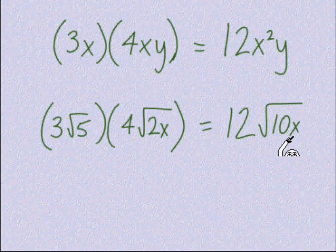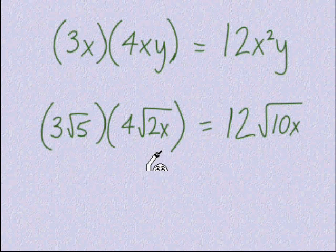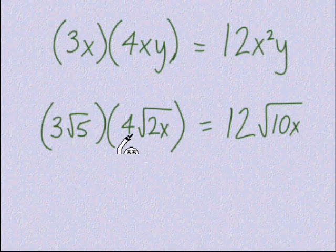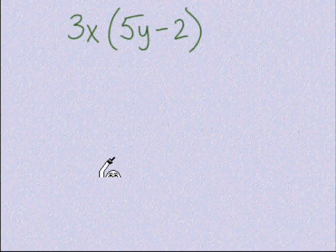An informal phrase I use is: outsiders go with outsiders, insiders go with the insiders. That helps me remember that when it comes to multiplication, we can definitely multiply radicals together — they do not need to be like radicals or like terms. Just remember: outsiders multiplied together and insiders multiplied together.